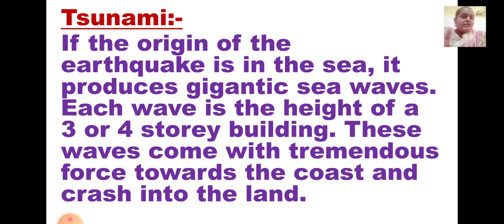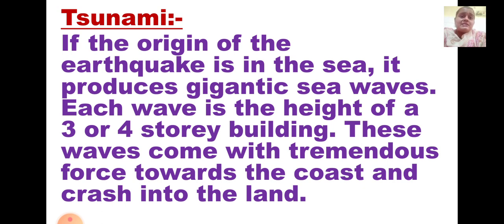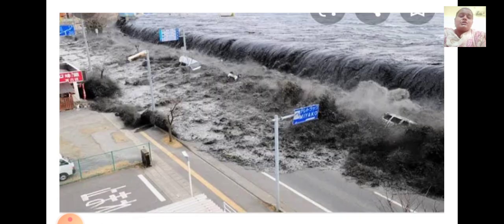Now, tsunami. There is a difference between tsunami and flood — tsunami is caused by sea waves, while floods are caused by continuous rainfall. If the origin of an earthquake is in the sea, it produces gigantic sea waves. Each wave is the height of a three or four storey building. These waves come with tremendous force towards the coast and crash into the land. This is the picture of tsunami — light poles and vehicles are swept away because of the immense force.